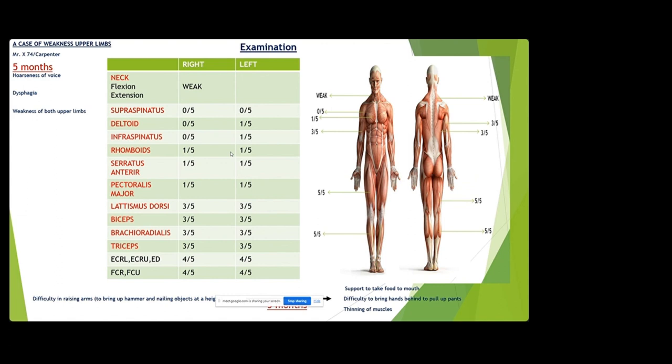Name some conditions where you have fasciculations. ALS — amyotrophic lateral sclerosis. You can also have it in thyrotoxic conditions, and in organophosphate poisoning.